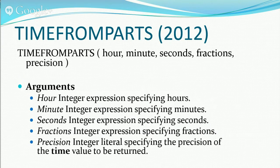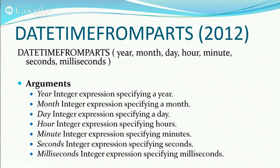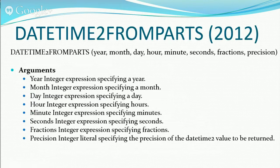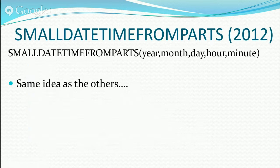DATETIMEFROMPARTS works similarly — you don't have to figure out the appropriate order for your locale; you always pass in the parameters in the same fixed order and always get back a datetime. DATETIME2FROMPARTS adds more precision than regular datetime but also takes up less storage space when you're not using the full precision.